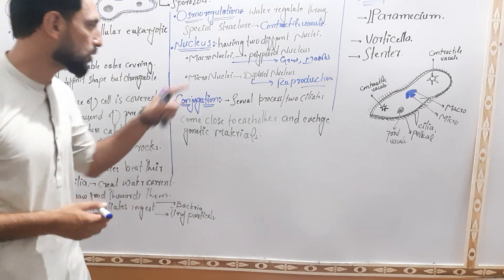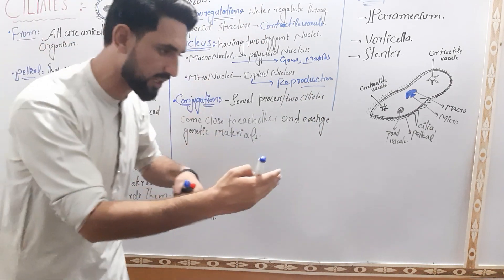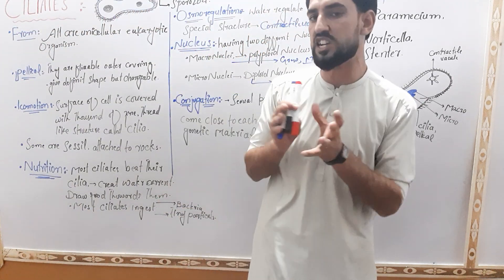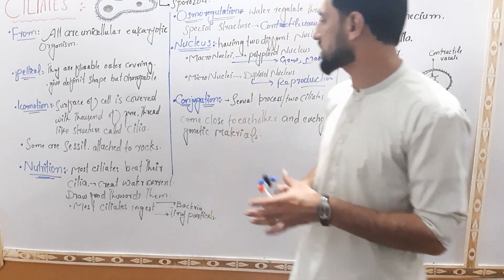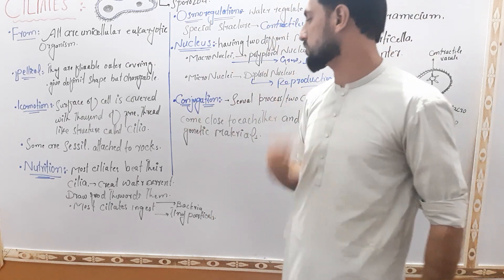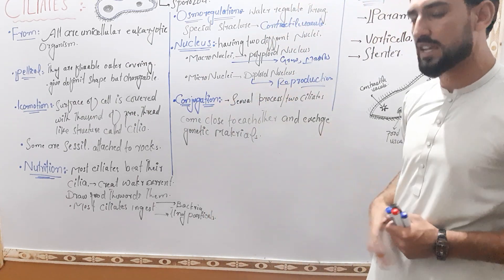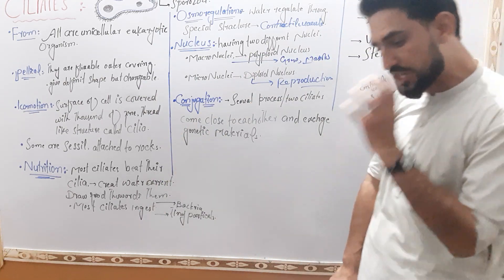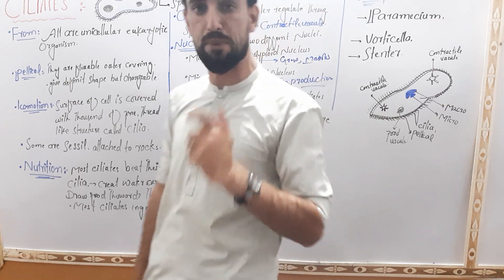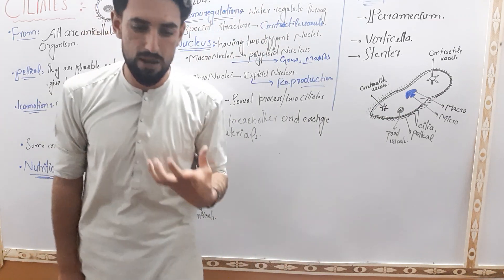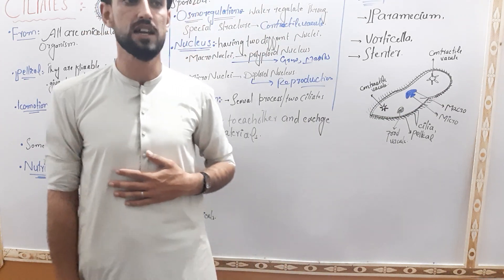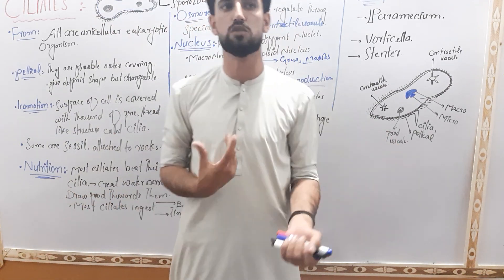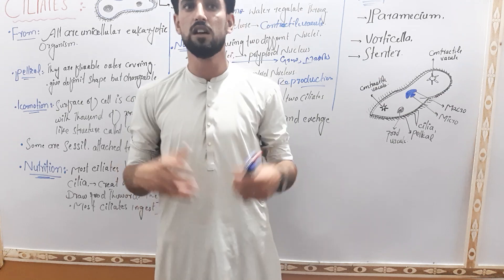The micronucleus functions in reproduction. If you have a micronucleus, the ciliates are able to reproduce. The last important process is conjugation. Conjugation is a special type of sexual reproduction process in ciliates.